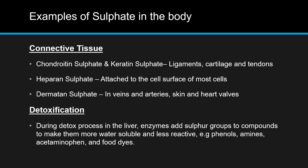During detoxification in the liver in phase 2, enzymes add sulphur groups to compounds to make them more water soluble and less reactive, meaning they're easier to excrete. These compounds include phenols, amines, food dyes and other toxic substances. This means people with impaired sulphate metabolism or deficiencies in sulphur or sulphate will have trouble removing certain toxins from their bodies. It has been found that some patients with autism have impaired sulphate metabolism, meaning they may be more sensitive to certain toxins.